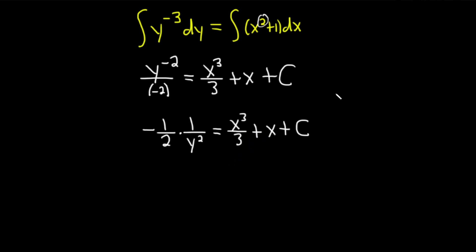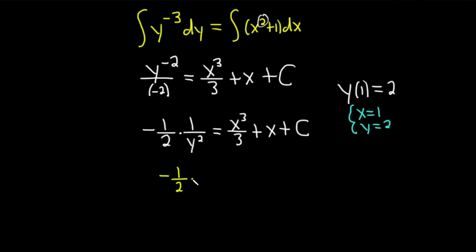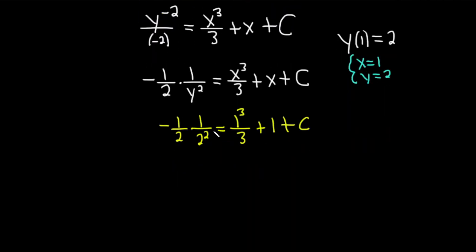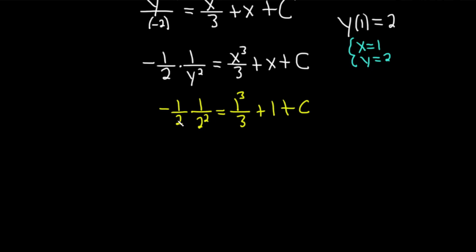Now we're going to use our initial condition. Our condition was y of 1 equals 2, meaning when x is 1, y is 2. We take these values and plug them into our equation to solve for C. Doing that: negative one-half times 1 over 2 squared equals 1 cubed over 3 plus 1 plus C. Everywhere we saw a y we put 2; everywhere we see an x we put 1.